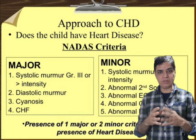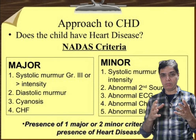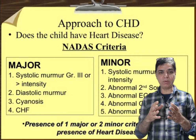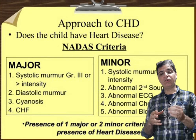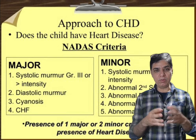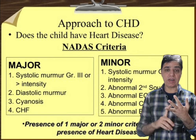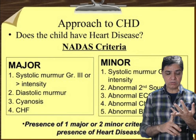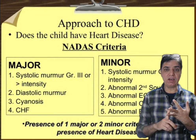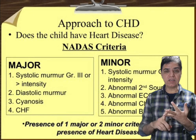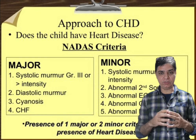If the major criteria are not present, we look for the minor criteria. Minor criterion number one is a systolic murmur of less than grade 3 — so grade 2 intensity. Number two is any child who has an abnormal second heart sound, which might be a muffled second heart sound, a very loud second heart sound, a wide fixed split second heart sound, or a single heart sound. Any abnormality of the second heart sound is one of the minor criteria for NADA.